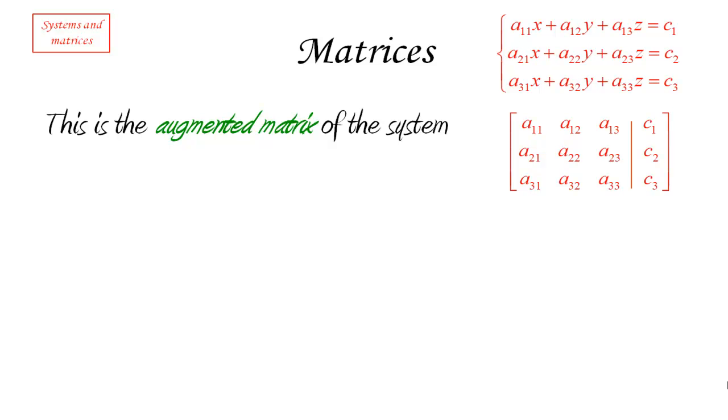Every time we have a system, we can very easily construct its augmented matrix by dropping the braces, dropping the x's, y's and z's and all the variables, and just keeping the coefficients and the constants on the other side, and dropping the equals as well.